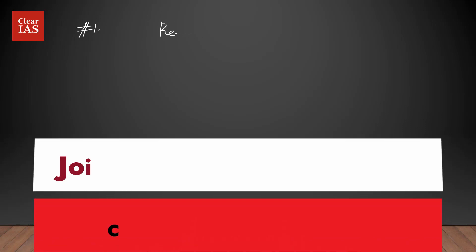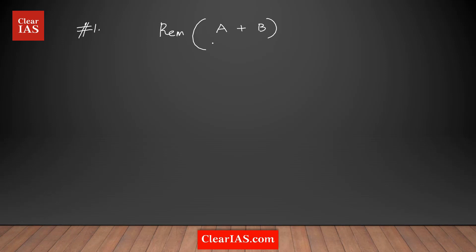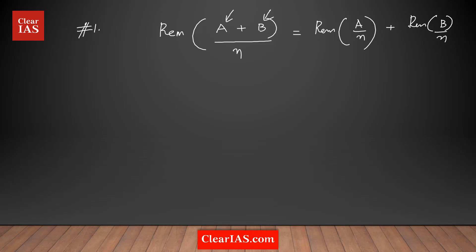The first rule: if I need to find the remainder of a sum of two numbers a + b when dividing by n, it equals the sum of the individual remainders. You divide each number by n, find each remainder, and add them. Let's take an example: find the remainder of 15 + 16 when divided by 7.